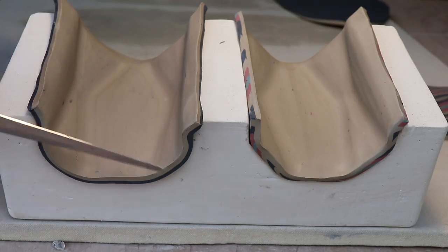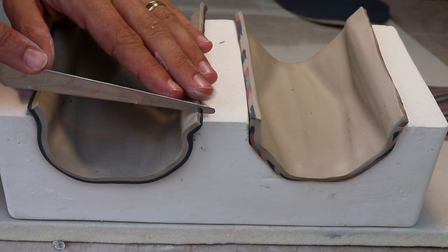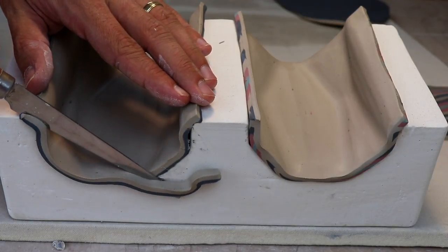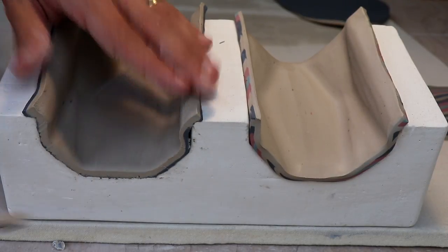We usually have some overlap here. So take a fettling knife and cut that off. I cut straight down through it. Works pretty well.